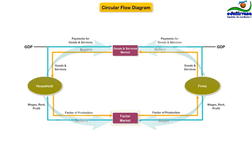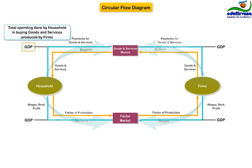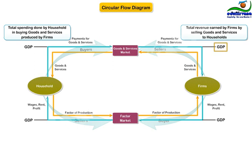Similarly, from the perspective of markets for factors of production, firms pay for inputs for production — wages, rent, profits, and net interest — which flows into the factors of production market as income of households, and it is also GDP. So GDP is the total spending done by households in buying goods and services produced by firms, and the total revenue earned by firms by selling goods and services to households.